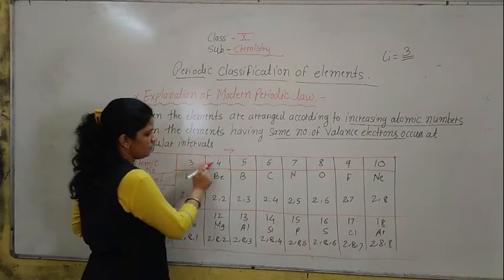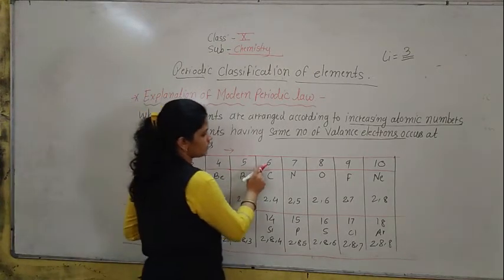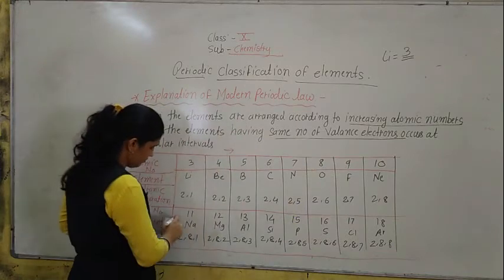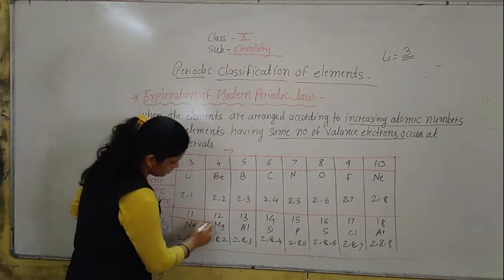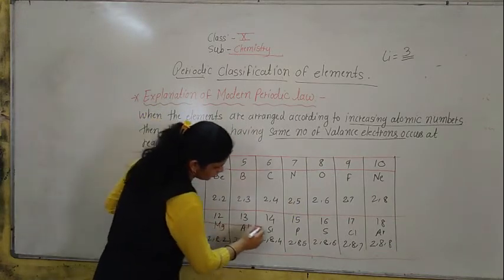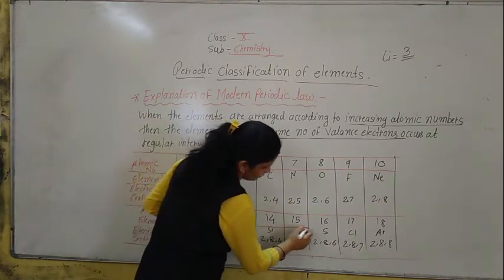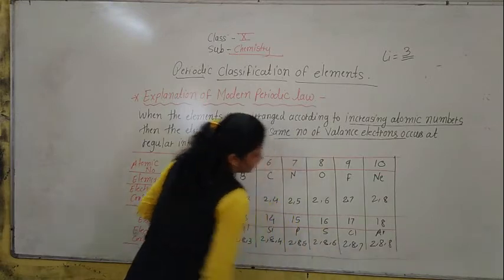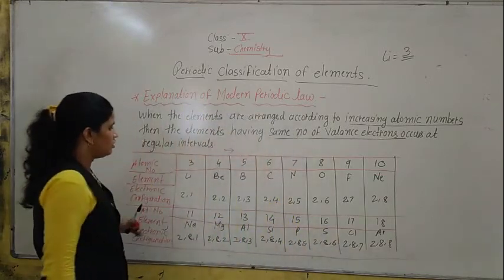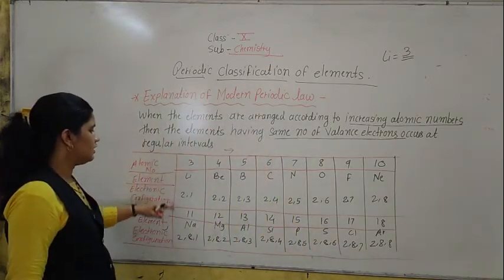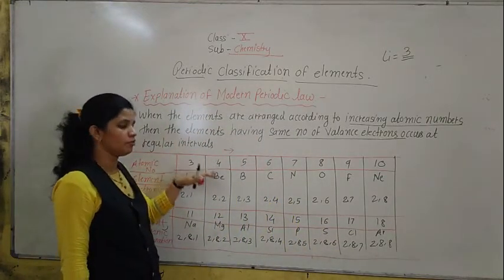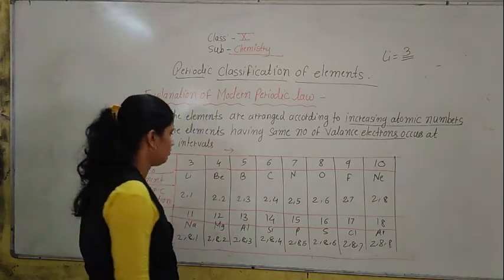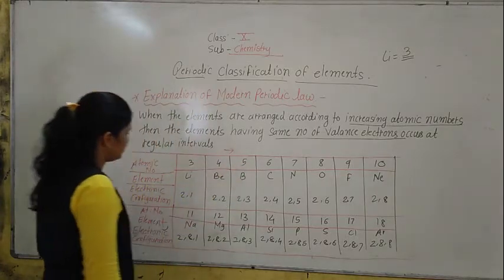So: 3, 4, 5, 6, 7, 8, 9, 10 — then 11, 12, 13, 14, 15, 16, 17, and 18. These are elements arranged according to the increasing order of atomic number.